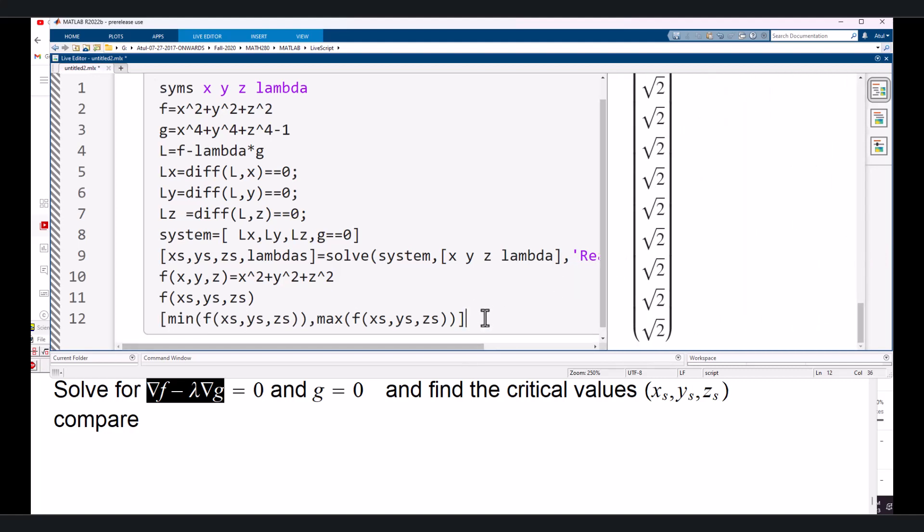And so, once we press CTRL-ENTER, yeah, it tells us that the minimum value is 1, and the maximum value is square root of 3, and you can read from here the points at which they occur. All right.